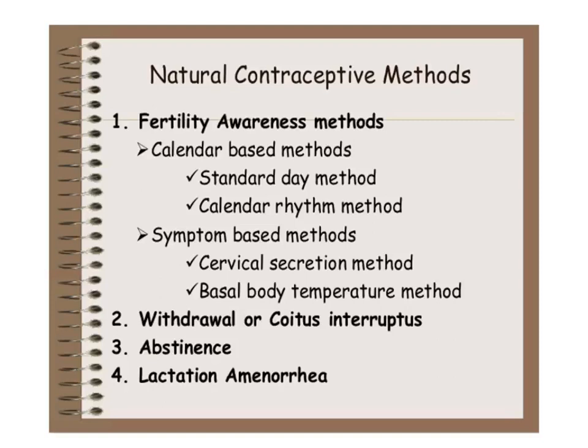Ovulation usually takes place on the 14th day of the cycle. After ovulation the egg remains viable for about 24 to 48 hours. We have to prevent sexual contact during the dangerous period: two to three days before and three days after ovulation — about a one-week period we try to avoid, as it has more chances of pregnancy. For infertile people we tell them to have sex during this fertile period; for those wanting contraception, we tell them to avoid this high fertility period.